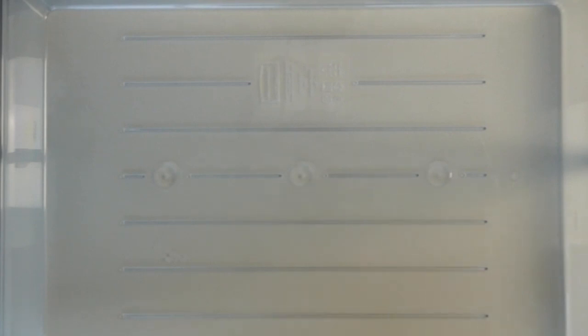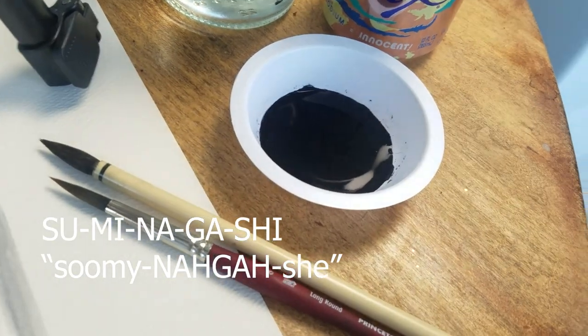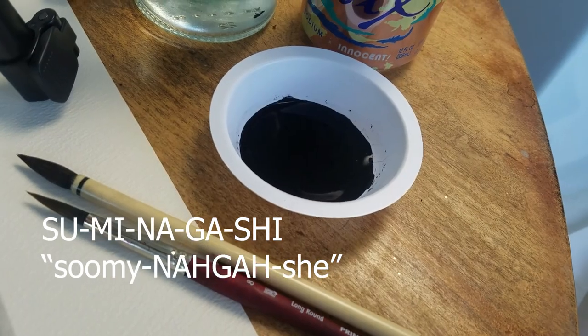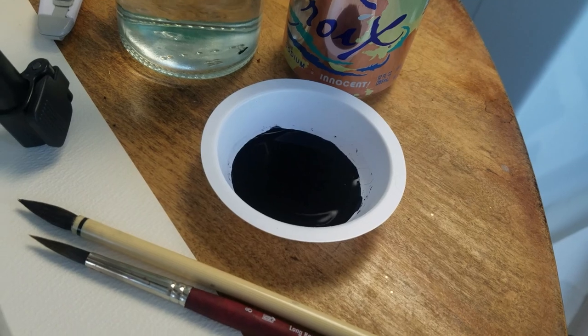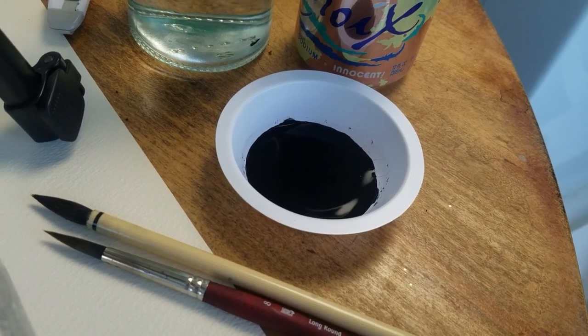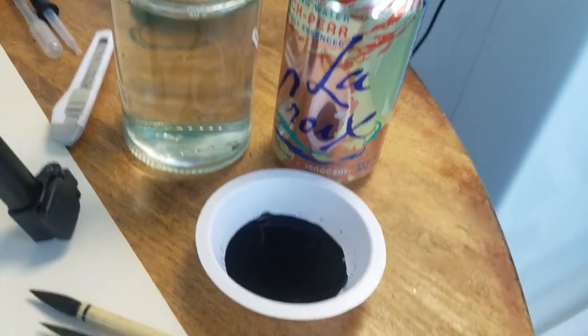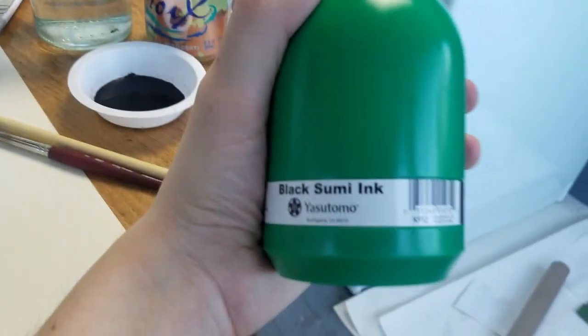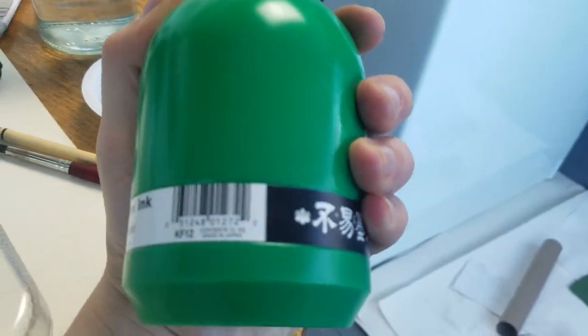I'm going to walk through some of the supplies I have here. Sumi in Sumi Nagashi comes from ink in Japanese. I have seen some people on YouTube call it Chinese marbling. That's completely wrong. Sumi Nagashi is a Japanese word. It means floating ink. So here's the ink. Get some of this stuff at most art stores. It's good stuff. Shake it before you use it.